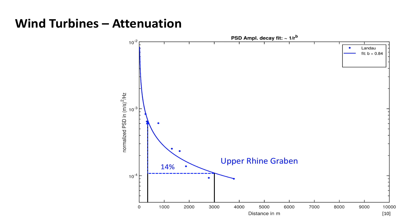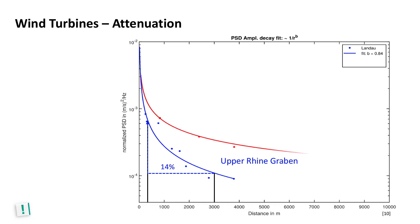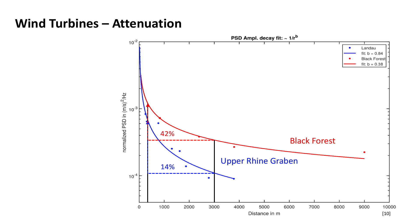Studies at other wind turbines and different soil properties show a similar behaviour. The exponent b, however, depends on the local site conditions. In this example from the Black Forest, the subsurface consists of hard rock. Here the estimated exponent is around 0.38. Compared to the example from the Upper Rheingraben, the signal decays more slowly — to only 42% at a 10-fold distance.